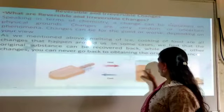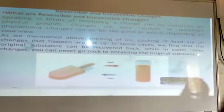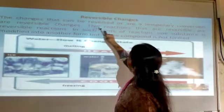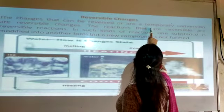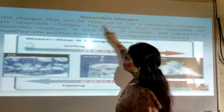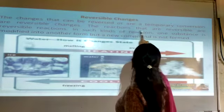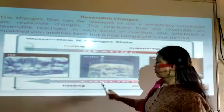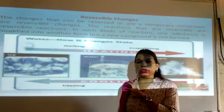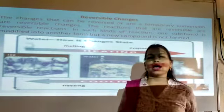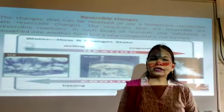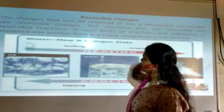These are all examples of reversible and irreversible changes. The changes that are temporary are reversible. The reactions that are reversible are called reversible reactions. For example, if we put water into the freezer, it converts into ice. Again, when we take the ice out of the freezer, it converts back into water. This is an example of a reversible change.